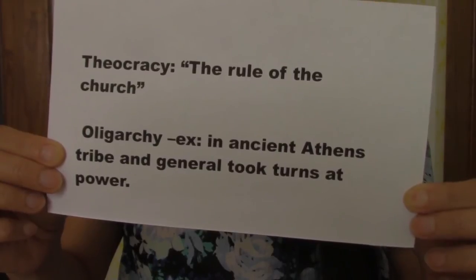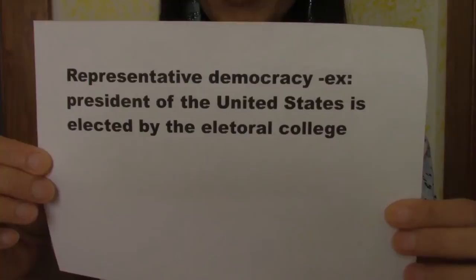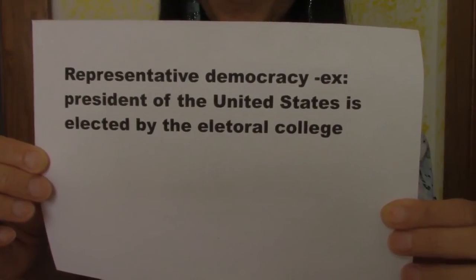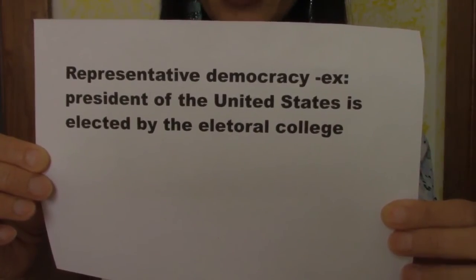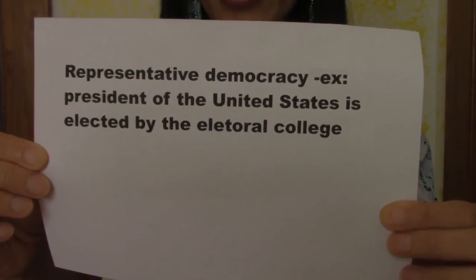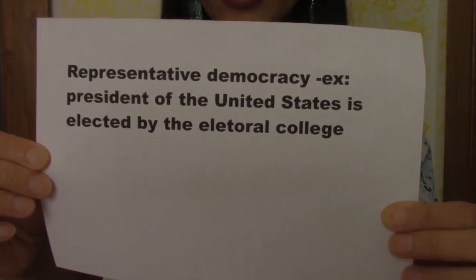Oligarchy example: in ancient Athens, a tribe and a general took turns at power. Representative democracy example: the President of the United States is elected by the Electoral College.